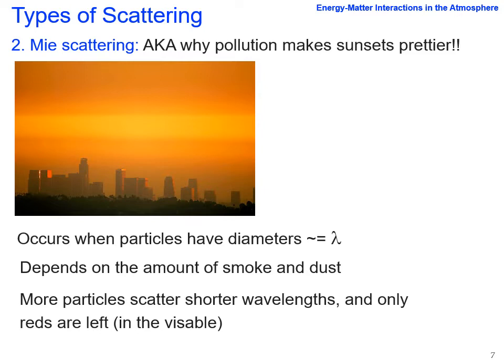The second type of scattering is Mie scattering, which is why pollution or smoke from fires makes sunsets prettier. It occurs when particles have diameters about the same size as the wavelength. It depends on the amount of smoke and dust in the atmosphere, and the more particles there are, the more they're going to scatter the shorter wavelengths — blue and green — and only the reds are going to be left. So you're going to get reddish sunsets, and you also see reddish moons when you have a lot of pollution or, more commonly in this area, when you have forest fires.